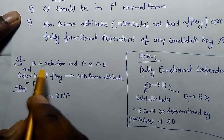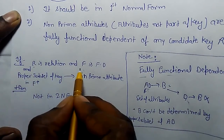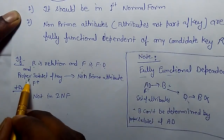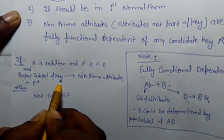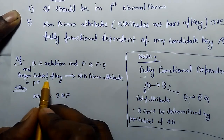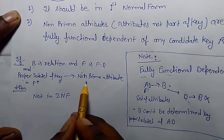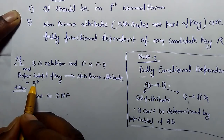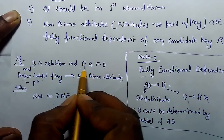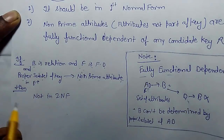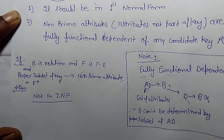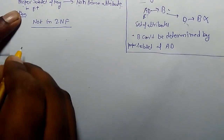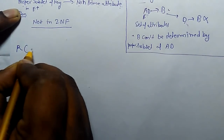There is an algorithm for 2NF: if R is a relation schema and F is a set of functional dependencies, and a proper subset of a key of relation R determines a non-prime attribute in F-closure, then that functional dependency means the relation would not be in 2NF. Let me make it easier to understand.